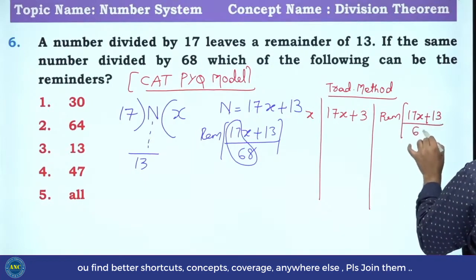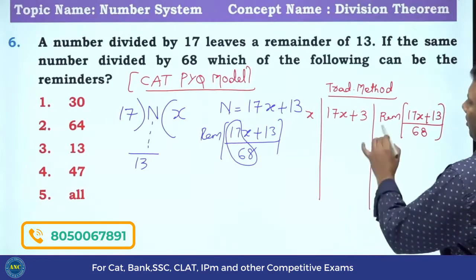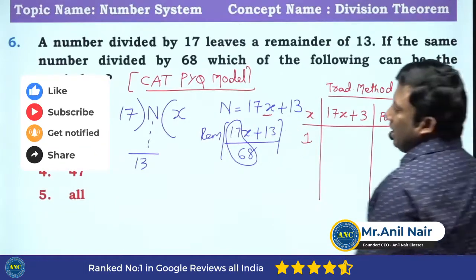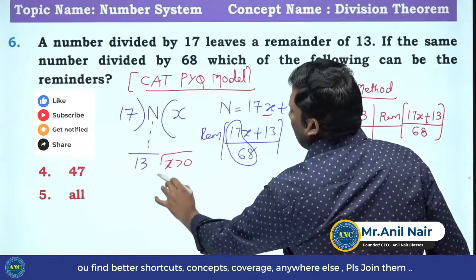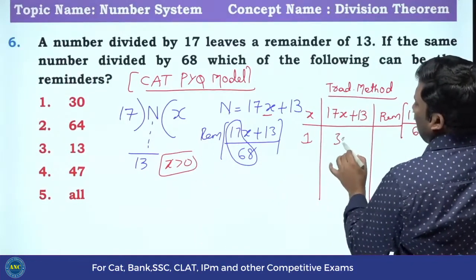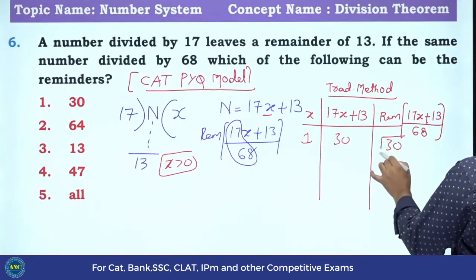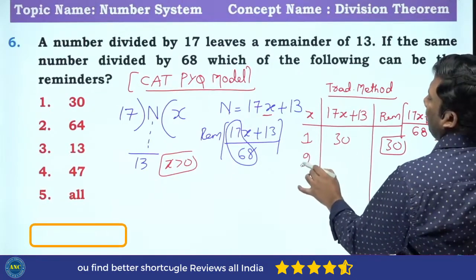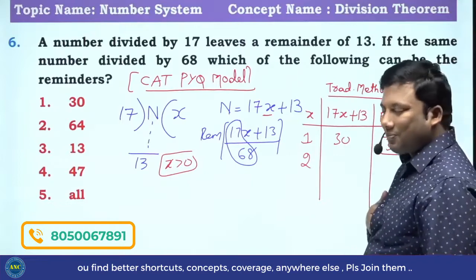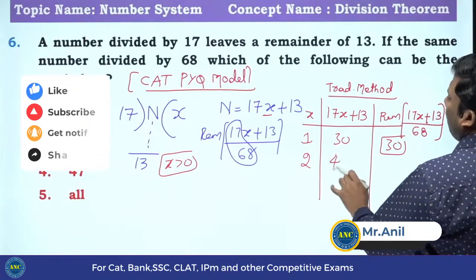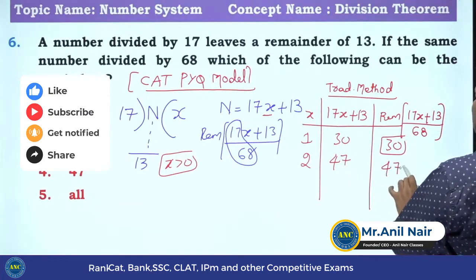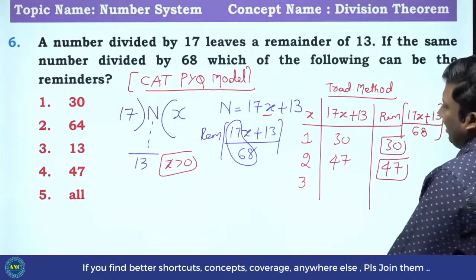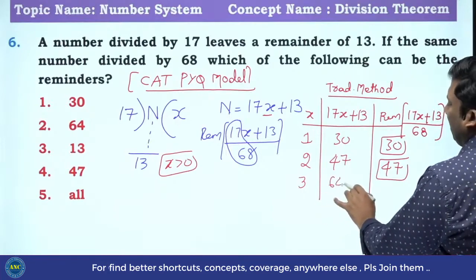When 17X plus 13 is divided by 68, let us take one by one. If X value is 1, quotient should be greater than 0. If X is 1, 17 plus 13 is 30. 30 divided by 68, first one, remainder is 30. X value is 2, 17 times 2 is 34, 34 plus 13 is 47. 47 divided by 68, remainder is 47. X value is 3, 17 times 3 is 51, 51 plus 13 is 64.